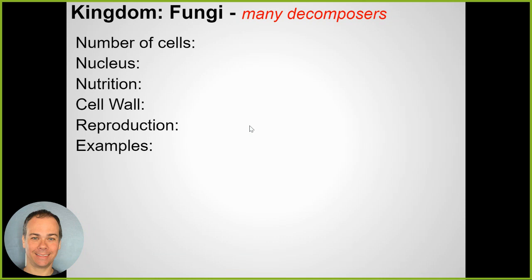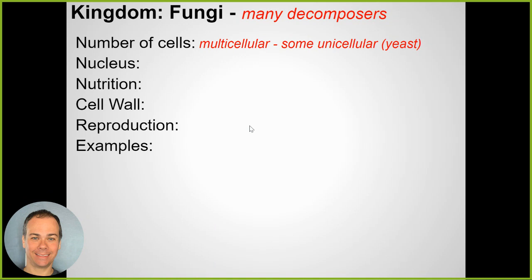Fungi are mostly decomposers and mostly multicellular - things like a mushroom - but some are unicellular like yeast, which we use in cooking or brewing beer and wine. They're eukaryotes.